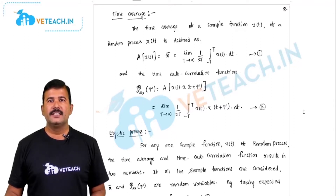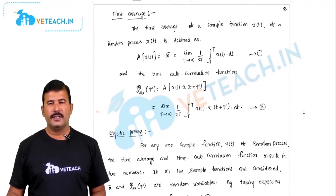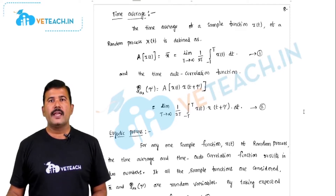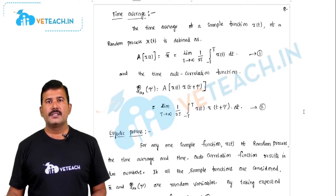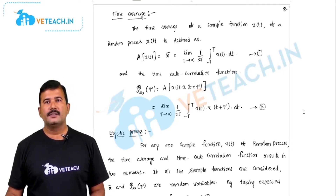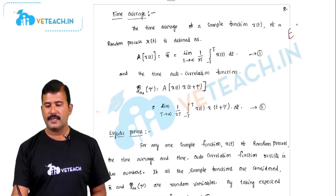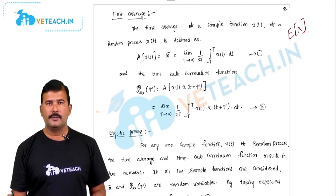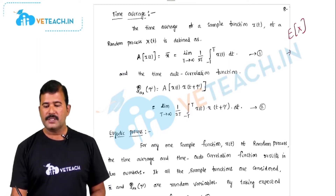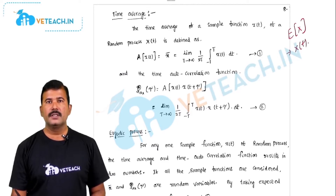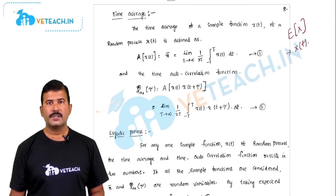Welcome to WeTeach. In this video I am going to discuss about the time average of a random process. Time average is different from the statistical average for a random process. Usually the statistical average, that is expected value of x, is defined for a random variable. Since the random process involves time functions, the time average is used for the random process.